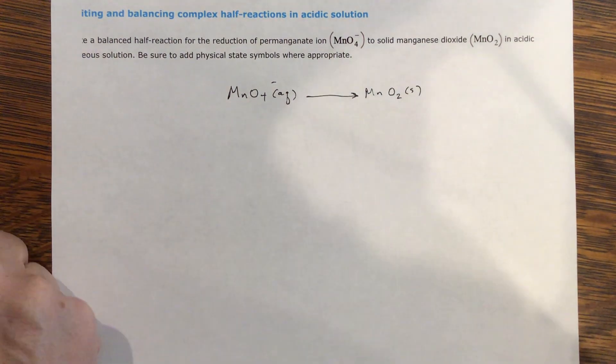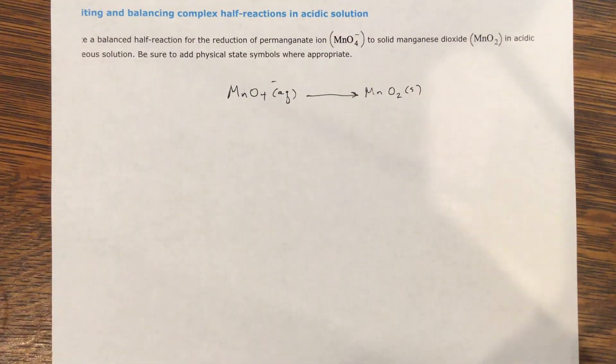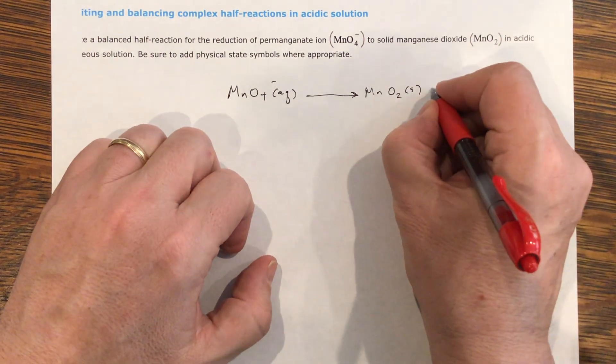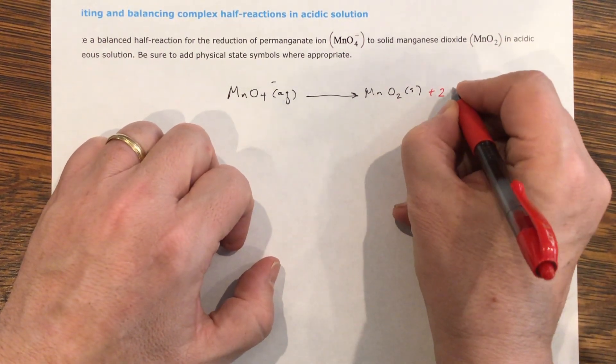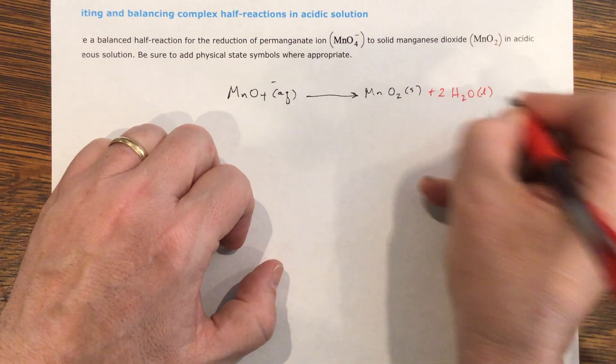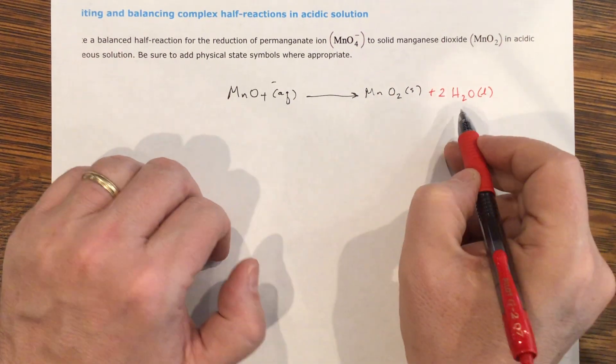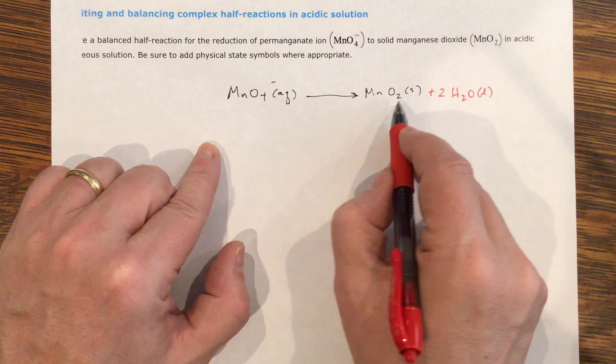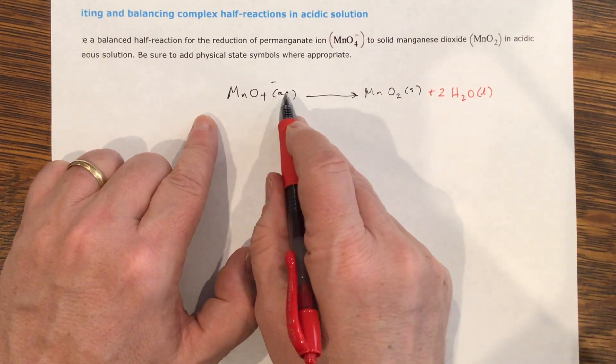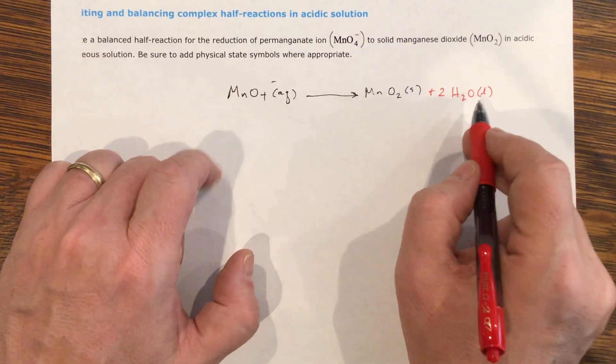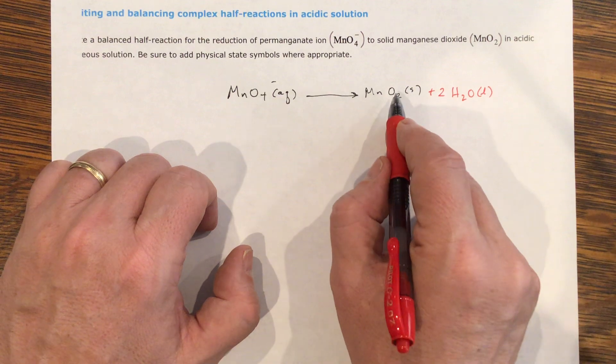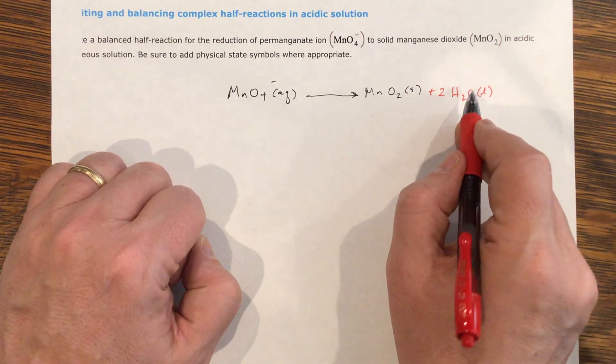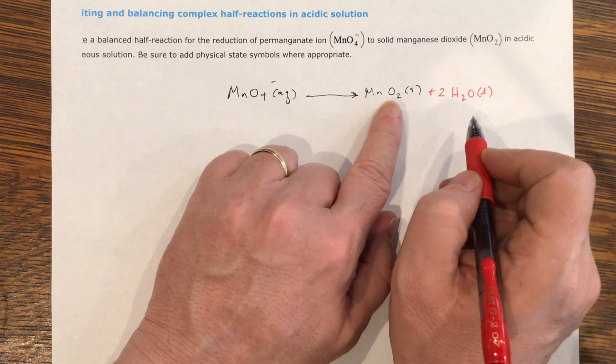So I have four oxygens here, two here, so I'm going to add two waters to this side, and water is liquid. That's my next step. So here's my first step, then balance the elements here. Then I'm going to add waters because I had less oxygen, more oxygen. So I add water equal to the number that I'm missing.